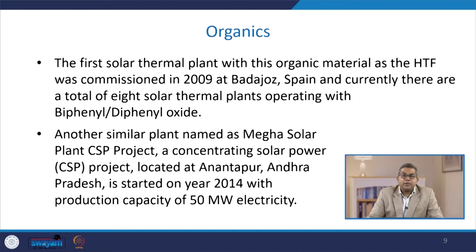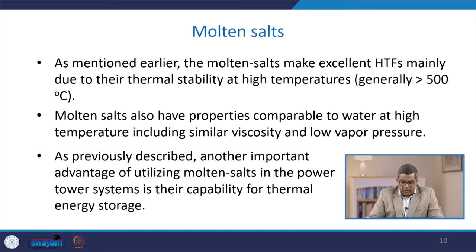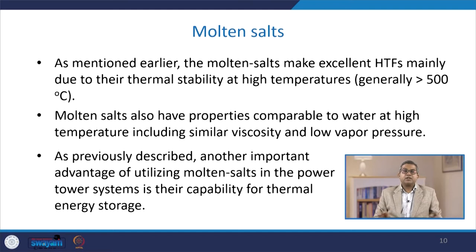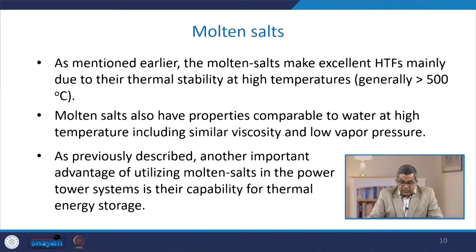Another similar plant, named the Mega Solar CSP project—a concentrating solar power project located at Anantapur, Andhra Pradesh, India—was started in 2014 with a production capacity of 50 megawatts of electricity. Apart from organic materials, there are certain molten salts which have a large spectrum of operating temperature range.